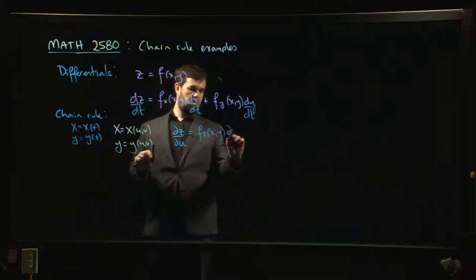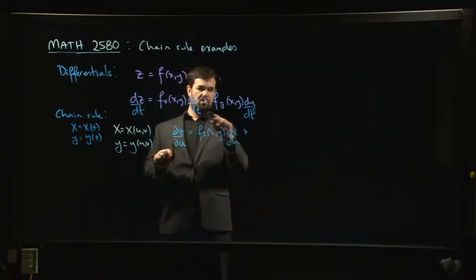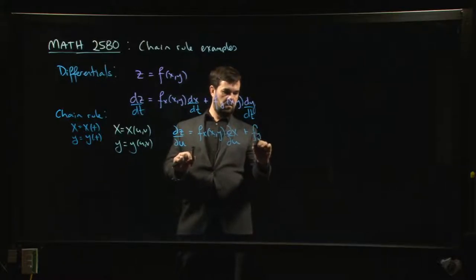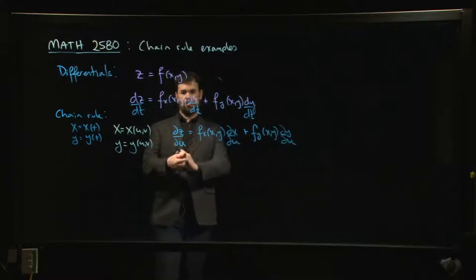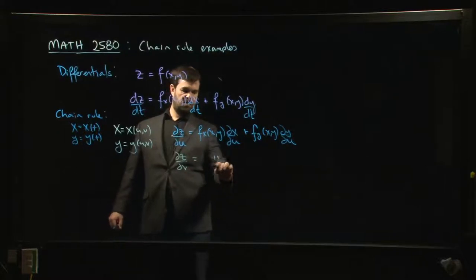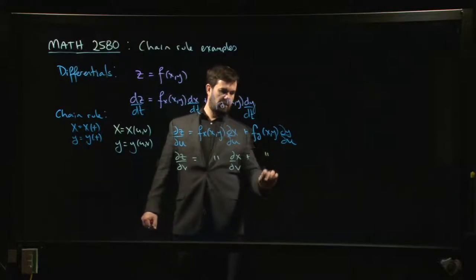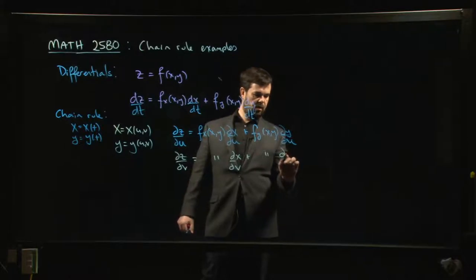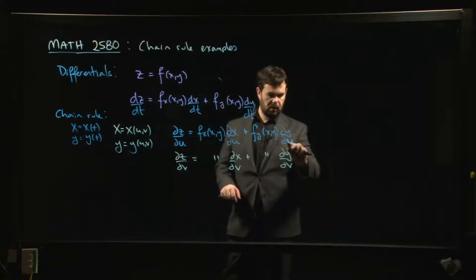So derivatives are now partial derivatives and it's going to be the same story. The only thing that changes is these derivatives are now the derivative of x with respect to u and the derivative of y with respect to u. And if I wanted to do dz/dv, still that, the only thing that changes is this is now dx/dv. That's still the f derivative with respect to y, and this becomes dy/dv. That's the only thing that changes.